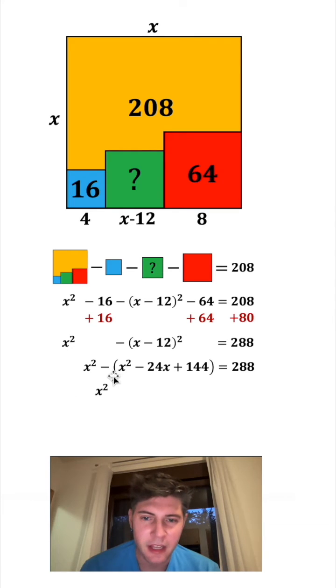Bring down the x squared again, and let's distribute this negative. So that'll be negative x squared, positive 24x, and then minus 144. And that's all equal to 288.